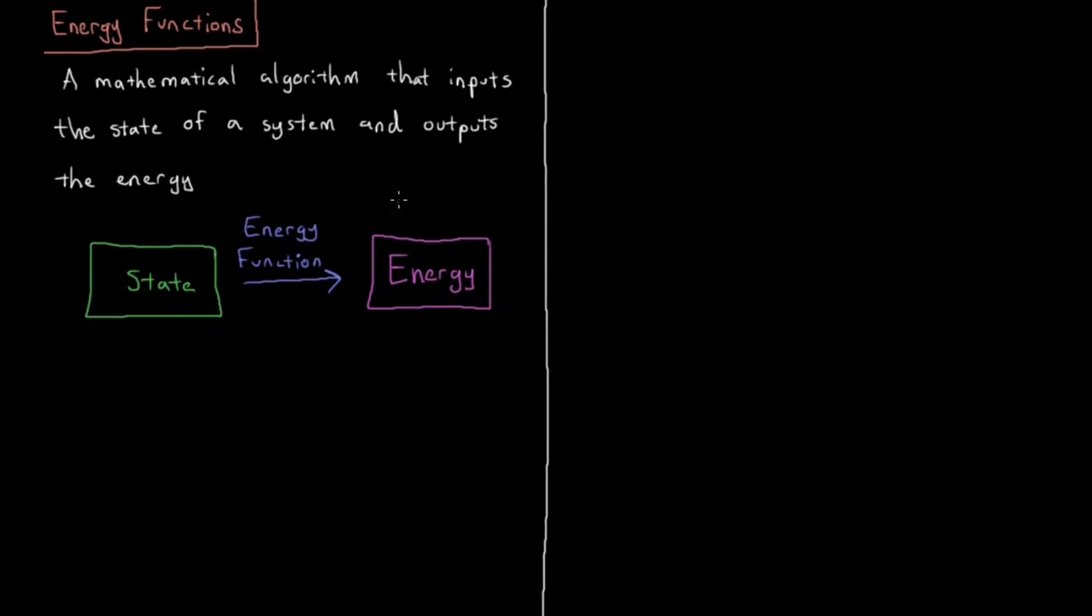So what constitutes the state of a system, which in our case we're usually most interested in molecular systems? That can include things like molecular coordinates. As we saw, if there are n atoms, then there are 3n Cartesian coordinates, 3n minus 6 internal degrees of freedom. Those coordinates are an important part of the state of the system or whatever particles you have which represent your system. We can also have things like the bonded structure.